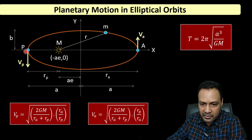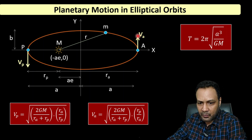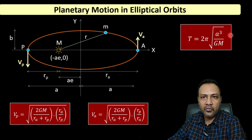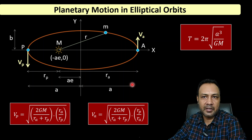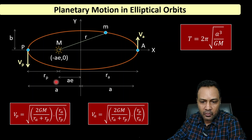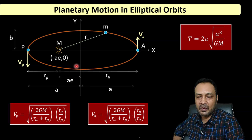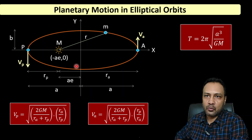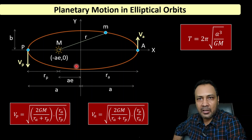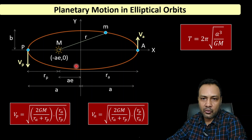Another key result is the time period of revolution: T = 2π√(a³/GM), where a is the length of the semi-major axis. With these two results we can proceed to do the necessary maneuvering to transfer the satellite from the inner orbit to the outer orbit.